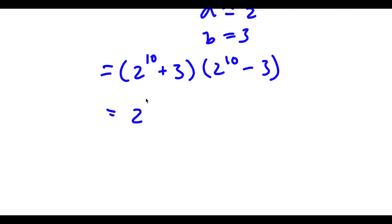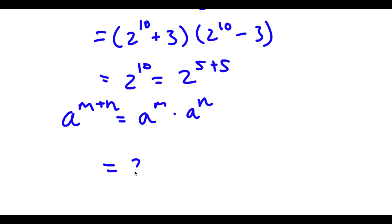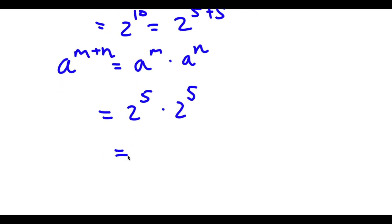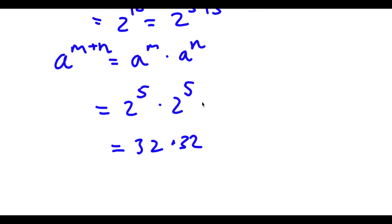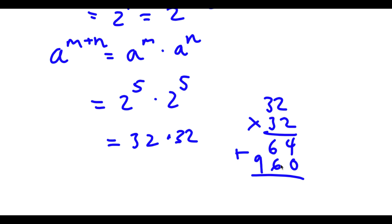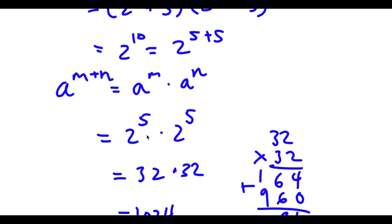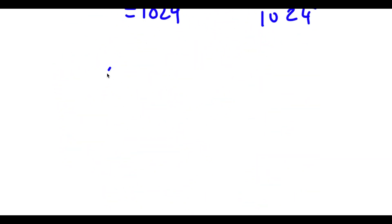Now, 2 to the power of 10 — let's go ahead and solve this. This is the same thing as 2 to the power of 5 plus 5. And if I have something in the form a to the power of m plus n, this is equal to a to the power of m times a to the power of n. So 2 to the power of 5 plus 5 equals 2 to the power of 5 times 2 to the power of 5. Now 2 to the power of 5 is equal to 32, so I have 32 times 32. 32 times 32: 2 times 2 is 4, 2 times 3 is 6, 3 times 2 is 6, and 3 times 3 is 9. So I get 1024. So because 2 to the power of 10 is 1024, I have 1024 plus 3 times 1024 minus 3.